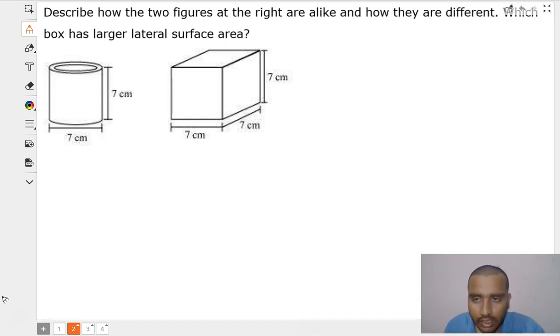We can see that this particular figure is cylinder, and this particular figure is cube. So therefore, we can easily find what is the difference. The difference is that one is cylinder, another one is cube.